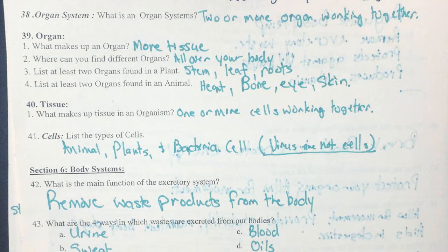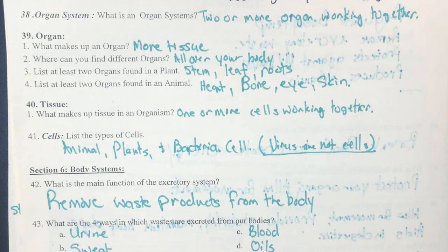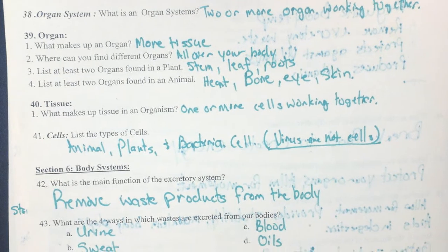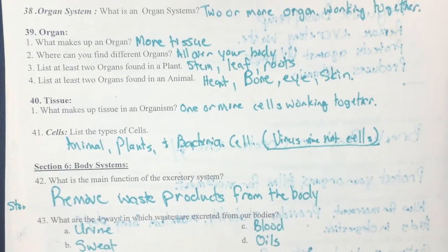There are three main types of cells: animal cells, plant cells, and bacteria cells. Remember, viruses are not cells — they are not living things and must have a host. Section 6 is over body systems. The main function of the excretory system is to remove waste products from the body.